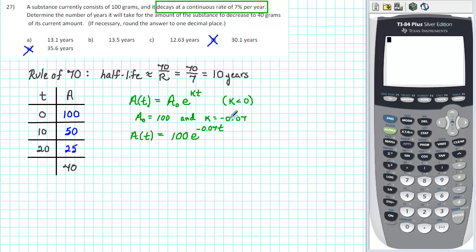We want to determine the number of years it will take for the amount of the substance to decrease to 40 grams. So we will substitute 40 for A(t) and then solve for t. To solve this equation first of all divide both sides by 100. We get 0.4 is equal to e to the negative 0.07t.